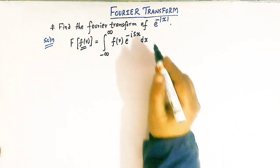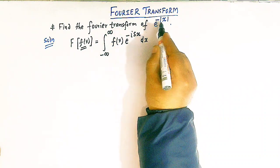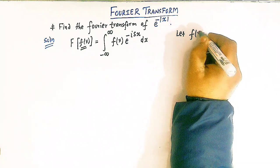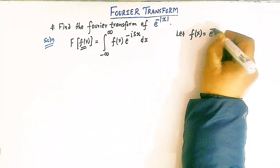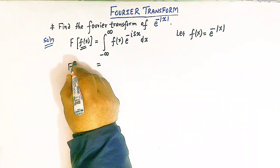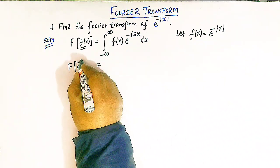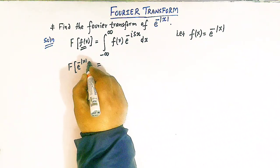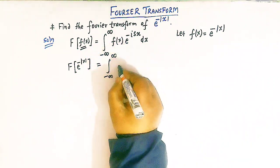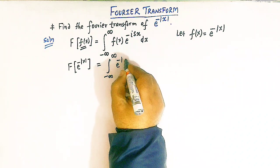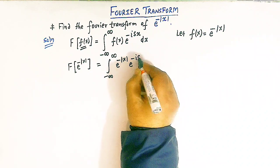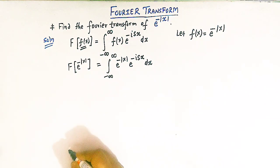So here we have to find the Fourier transform of e raised to minus mod of x. Let us take the function f of x as e raised to negative of mod x. So the Fourier transform of this function f of x is given by the integral from minus infinity to infinity of e raised to minus mod of x times e raised to minus i s x dx.